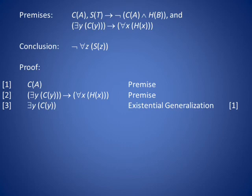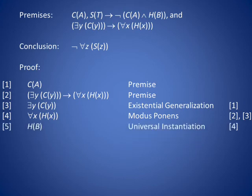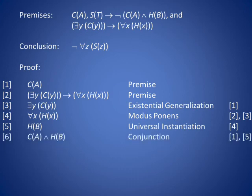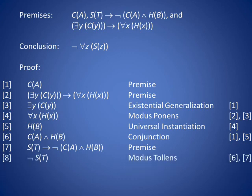Now we can use modus ponens on line 4 to get for all x, h of x. Then the x in line 4 can be universally instantiated to b to produce h of b on line 5. Conjunction applied to lines 1 and 5 results in c of a and h of b on line 6. Now we introduce the second premise: s of t implies the negation of c of a and h of b on line 7.